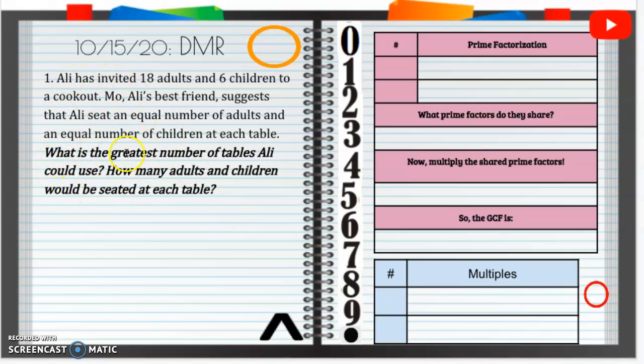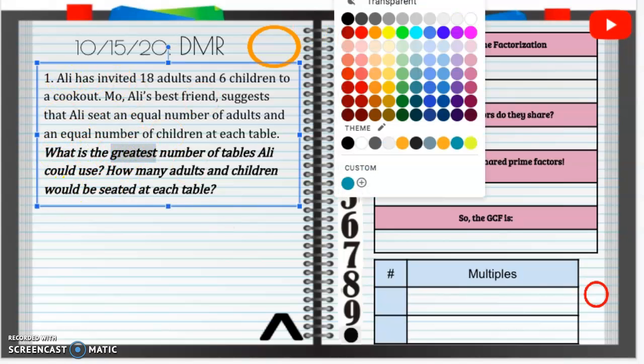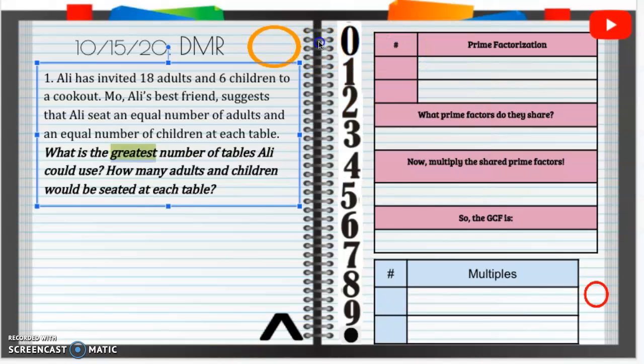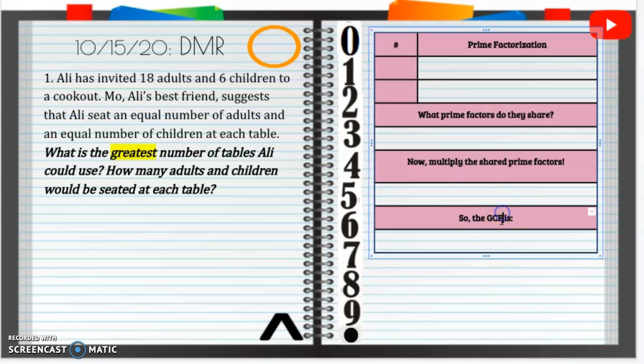So, first part, our biggest keyword here is greatest. The biggest keyword, greatest. Greatest number of tables. So, we're going to find the greatest common factor. So we're not going to need this least common multiple. We can go ahead and get rid of that for now.